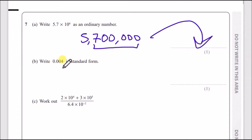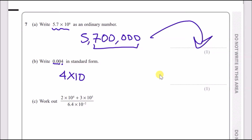Question 7b: write 0.04 in standard form. The trick is to take the first non-zero digit, which is four, then write times ten to the power of something. Because you've got zeros before the number, count how many — there are three — and because they come before the digit it'll be negative three. So the answer is 4×10⁻³.